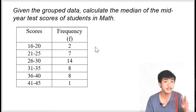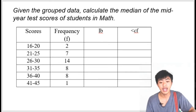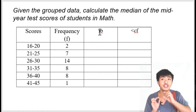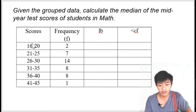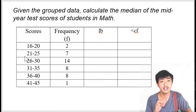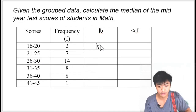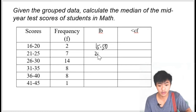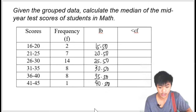Ang unang gagawin mo is to add two columns, kagaya din nung ginawa natin sa pagkuha ng mean ng grouped data — nagdagdag tayo ng dalawang columns para kina lower boundary at less cumulative frequency. The lower boundary, or lower true class boundary, we can obtain this by simply subtracting 0.50 from the lower limit. So yung lower limit natin dito is 16, kaya 16 minus 0.50 is 15.50. Next, 21 minus 0.50, that is 20.50, and so on — subtract ka lang ng 0.50 sa lower limit and then you complete the column.